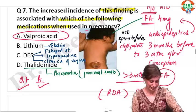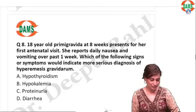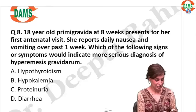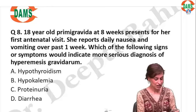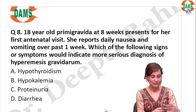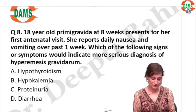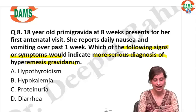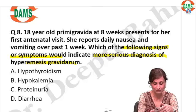Let's move on to question number 8. Your patient is 18 years old and has come to us with nausea and vomiting. Which of the following signs or symptoms would indicate a more serious disease of hyperemesis gravidarum?